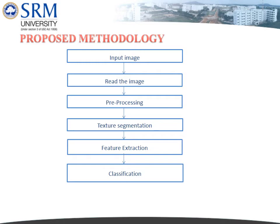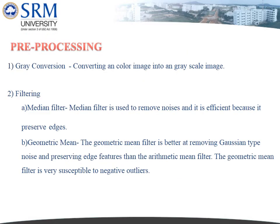In the proposed methodology, the first step is to read the input image and then pre-process it to segment the image. Features are then extracted from the segmented image and finally classified. In pre-processing, gray conversion and filtering are the two techniques used. Gray conversion converts a color image into a grayscale image, and median filtering is used to remove noises.